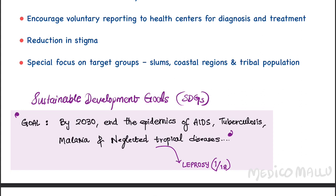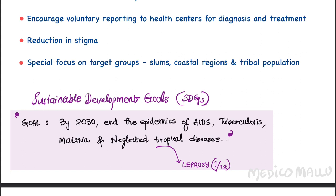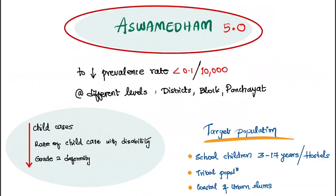The Sustainable Development Goals (SDGs) state that by 2020, we have to end the epidemics of AIDS, tuberculosis, malaria, and neglected tropical diseases. Leprosy is one among the 18 neglected tropical diseases listed under the SDGs.